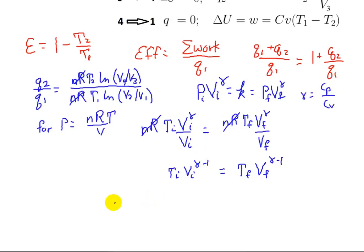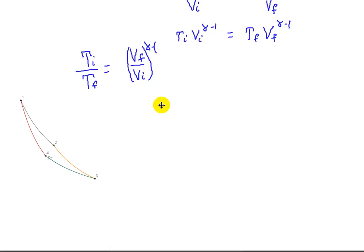Alright, now let me just rearrange this very slightly, and we'll say that T sub i over T sub f is going to be equal to V sub f over V sub i, and of course that's still going to be the power of gamma minus 1.